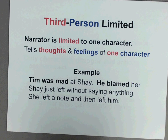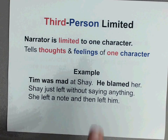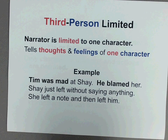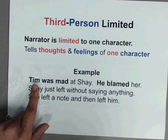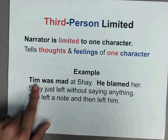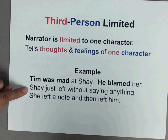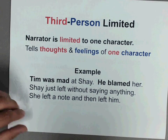The next one is third person limited. That means the narrator is limited to only one character's thoughts and feelings — they tell thoughts and feelings of only one character. For example: "Tim was mad at Shay. He blamed her. Shay just left without saying anything. She left a note and then left him." So the narrator tells us how Tim was feeling and what he was thinking, but we don't know what Shay was feeling or thinking — we just know what she did.